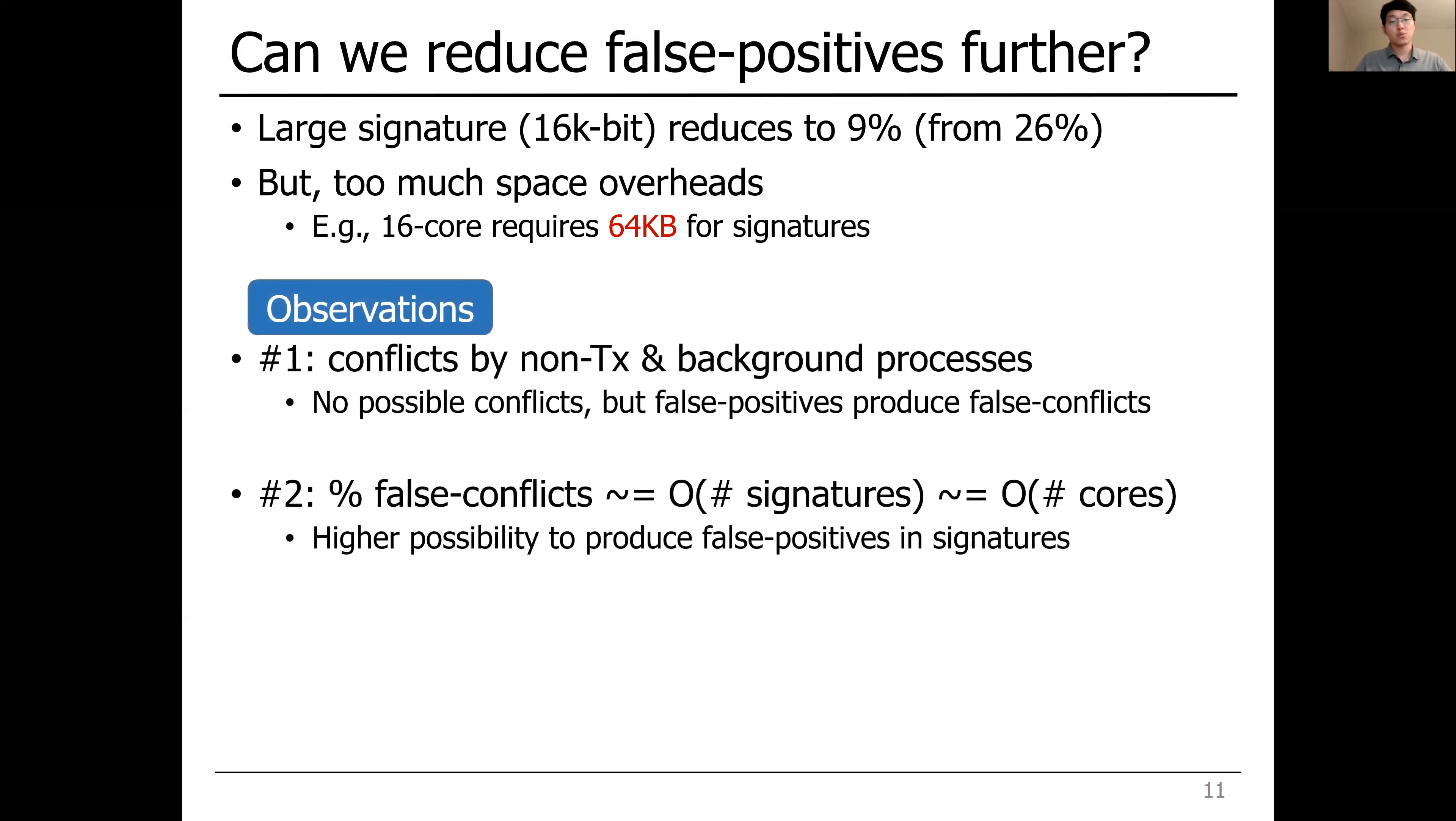First, we observed false-conflicts happen not only between transactions, but also between transactional and non-transactional processes. For example, durable transactions aborted due to false-conflicts with background processes that have no data sharing.